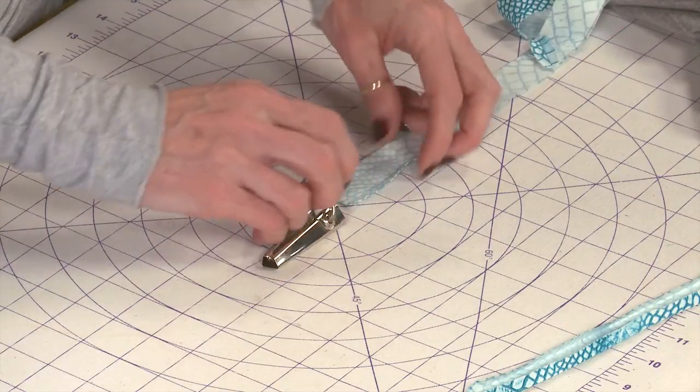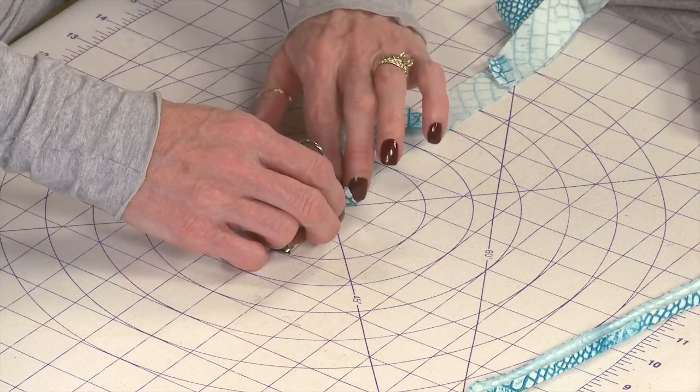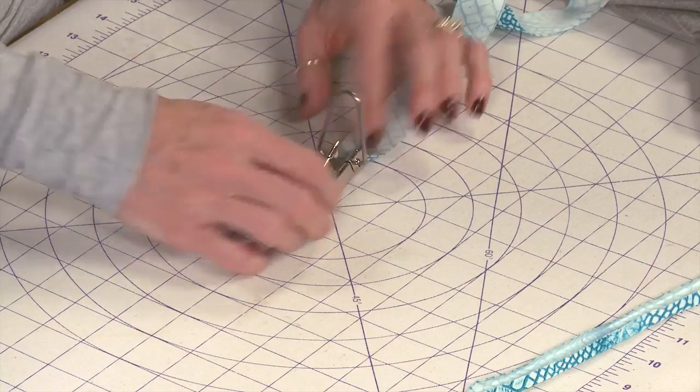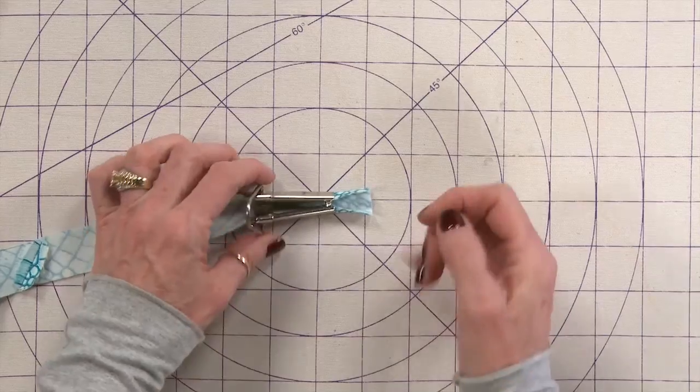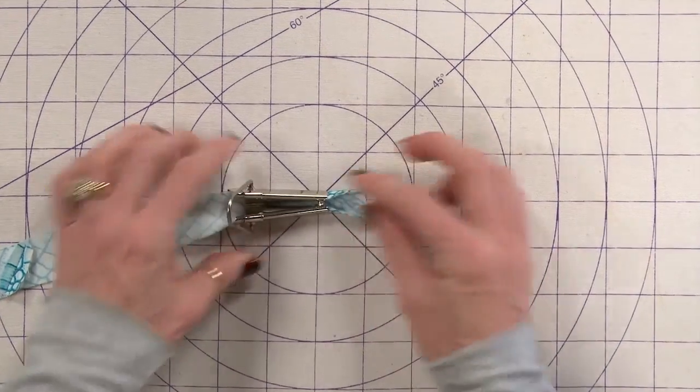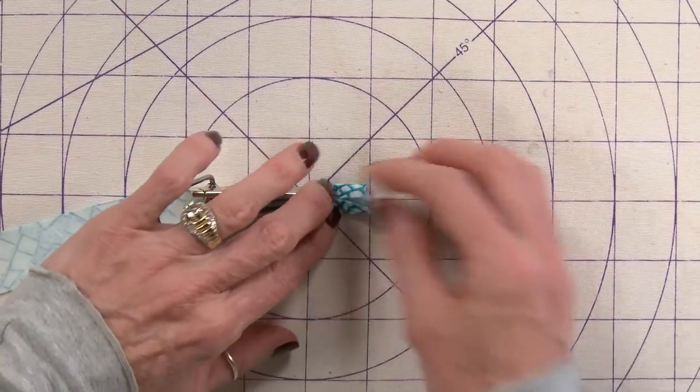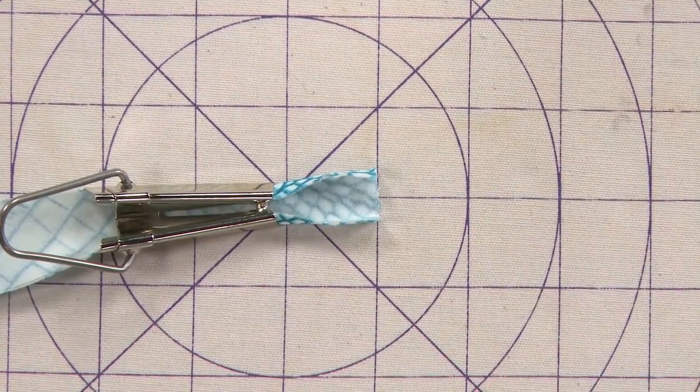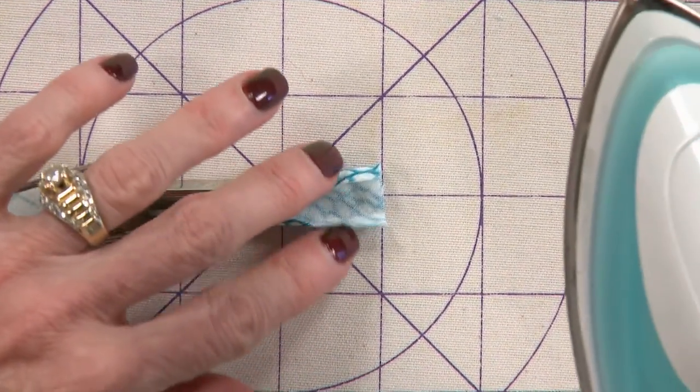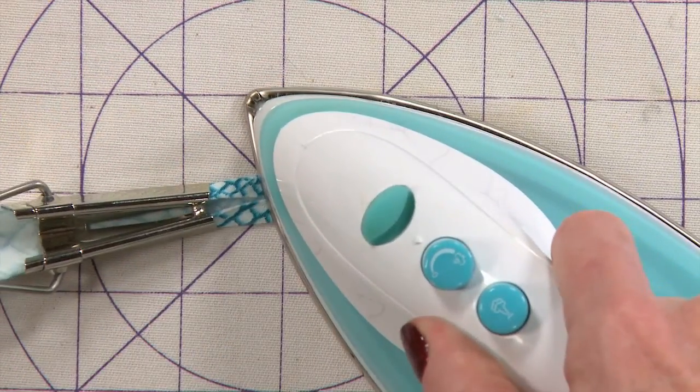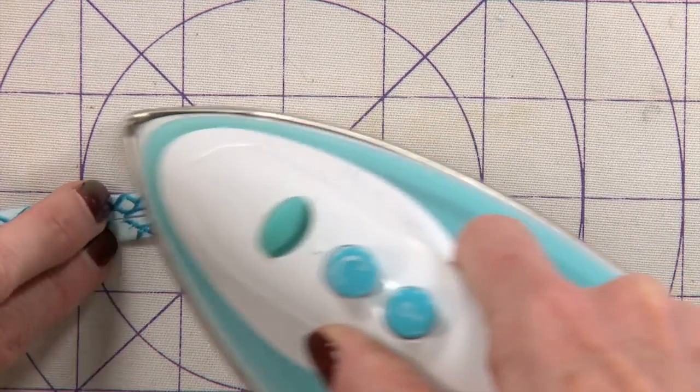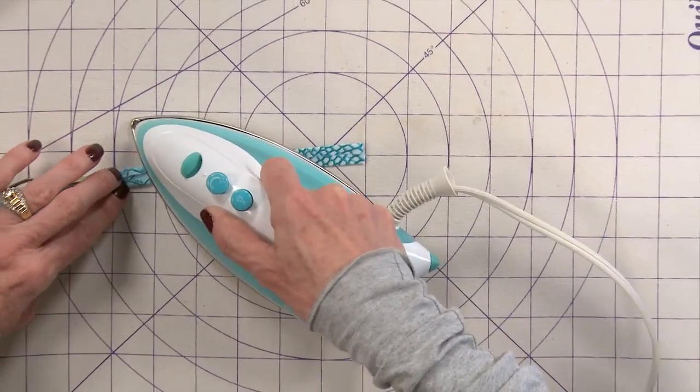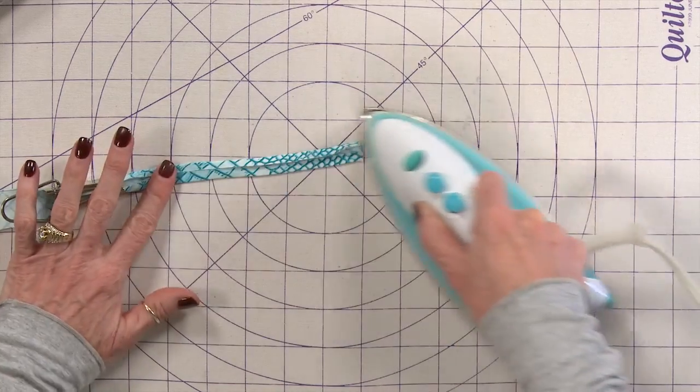So take your little bias tape maker and put the strip through here. I've cut this strip one inch wide. Pull it through and you can see because of the little lips on either side of this, it already starts doing the work for you. So it's really a very nice thing. The only thing that I'll warn you about if you've never done this before is if you have your iron on a full steam, you can scorch your fingers as well, but just be careful.